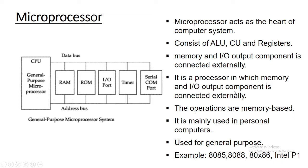The microprocessor is used where intensive processing is required — like video editing, mobile or video games, and software development. In such areas, the microprocessor is used. The microprocessor performs memory-based operations, and since it has fewer registers, all the data required is fetched from external memory connected to the microprocessor.